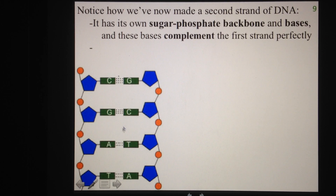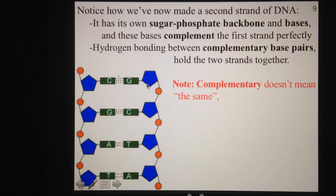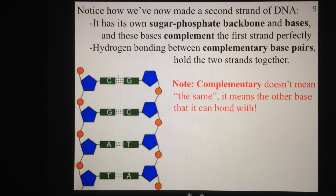Every C is joined with a G, and every A is joined with a T. Between these two strands are hydrogen bonds that hold the two strands together. We call these complementary base pairs because they have the right base to form the right number of hydrogen bonds. Please remember that complementary doesn't mean the same — this strand is not at all the same as this strand. Complementary just means that their bases are bonded properly between C and G, and A and T.